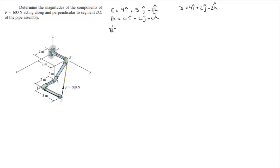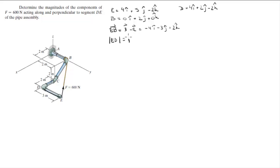So first we're going to find the vector that goes from E to B. You find that by doing position vector B minus position vector E, and you get that this is equal to negative 4i minus 3j plus 2k. Then you want to find the magnitude of this vector by doing the square root of the x-component squared plus the y-component squared plus the z-component squared, and this is equal to 5.39.